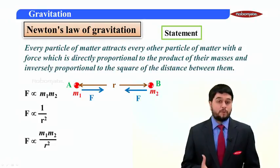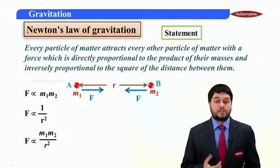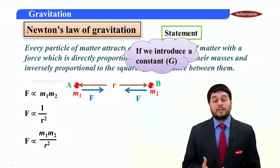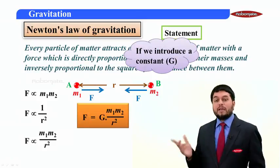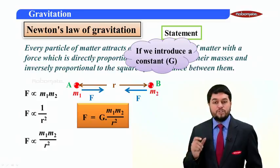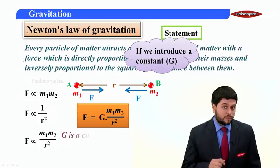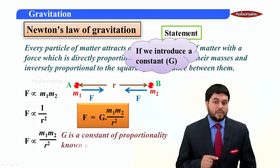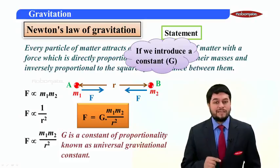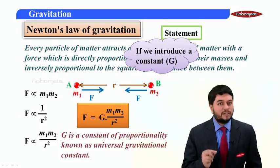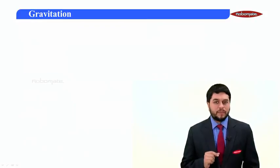If I remove the proportionality and make an equation out of it, I will have to put a proportionality constant. So, if we introduce a constant, say capital G, then the equation becomes F is equal to G M1 M2 upon R square. Now students note, this capital G is a very special constant. In this case, this constant of proportionality is called as universal gravitation constant. Remember it.